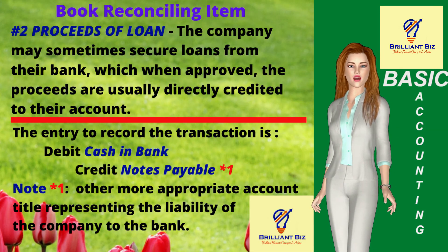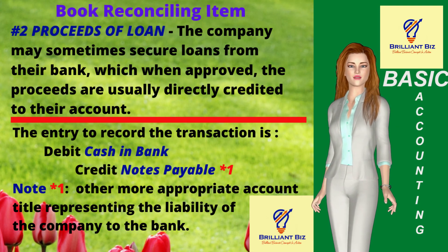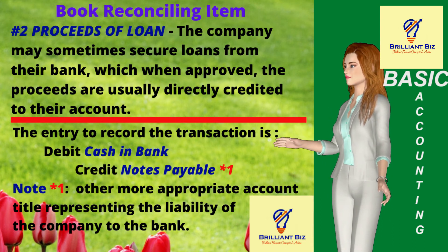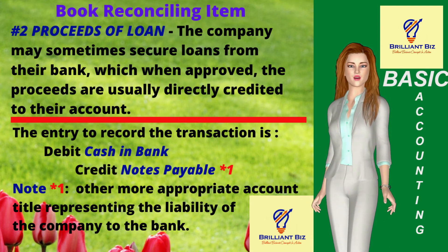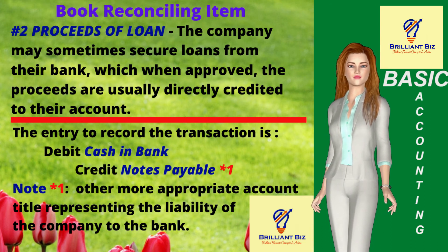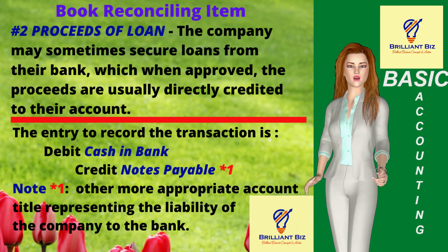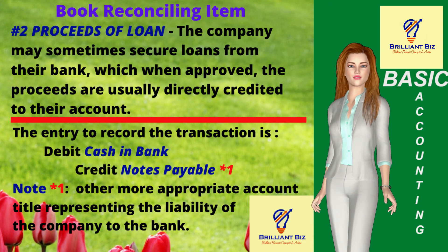Number two: proceeds of loan. The company may sometimes secure loans from their bank, which when approved, the proceeds are usually directly credited to their account. The entry to record the transaction is a debit to the company's general ledger cash in bank account and credit notes payable or other more appropriate account title representing the liability of the company to the bank.